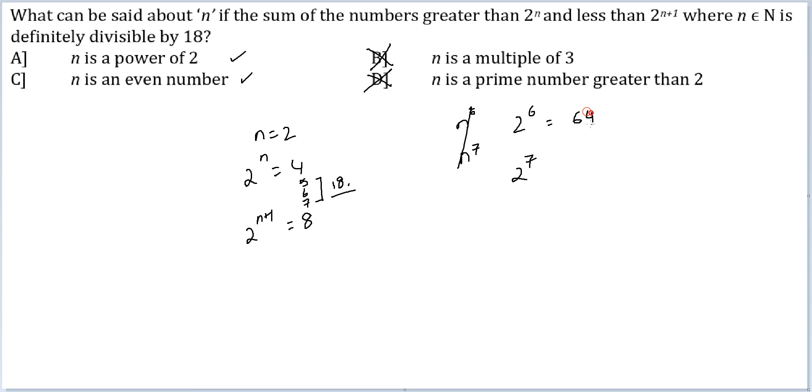So this gives me 64. This gives me 128. The numbers in between will be 63. Count of them will be 63. It will start at 65 and end at 127. Let me see if their summation is divisible by 18.